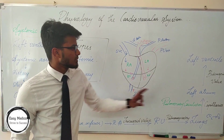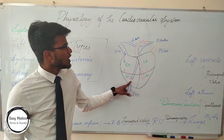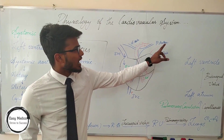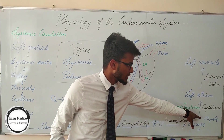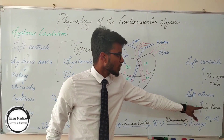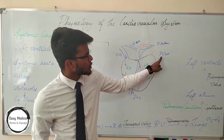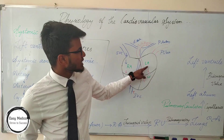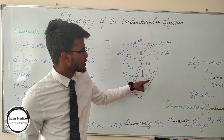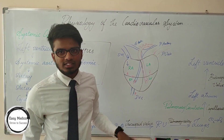From here starts the pulmonary circulation. The blood from the right ventricle goes through the pulmonary artery and reaches the lungs. At the lungs, the deoxygenated blood is converted to oxygenated blood at the stage of capillaries. The oxygenated blood from the lungs comes through the pulmonary vein to the left atrium, and from the left atrium it goes to the left ventricle through the bicuspid valve. Here completes the circulation.